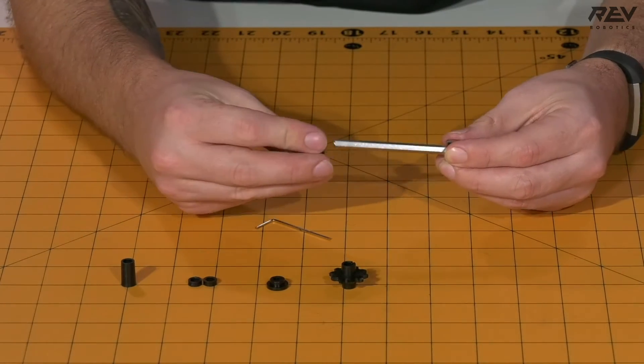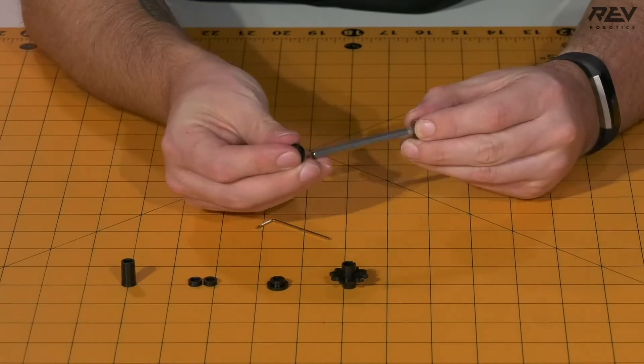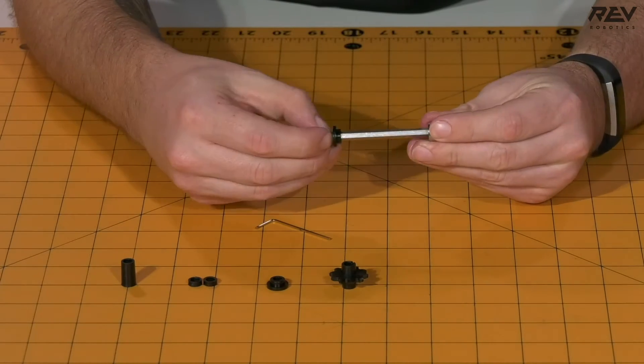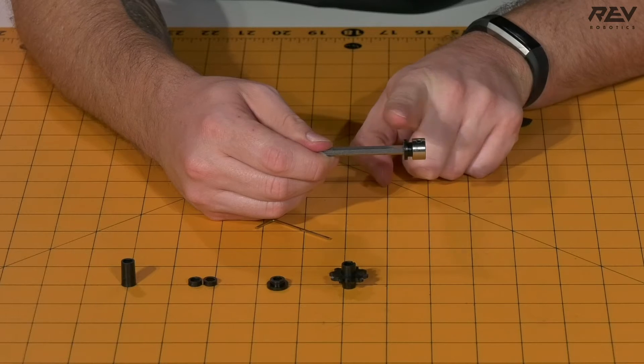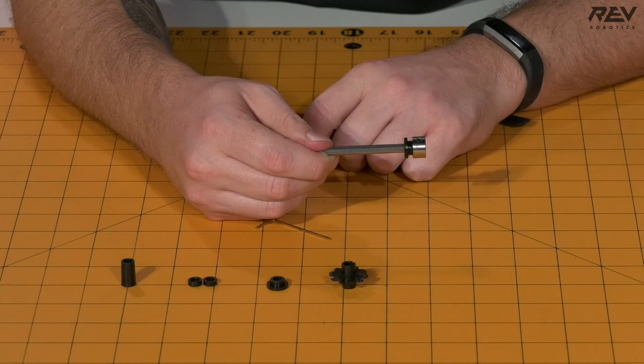Next, take your short through-bore bearing and slide it onto the end of the hex shaft. Note the location of the flange relative to the shaft collar, as this will be important further on in the assembly.